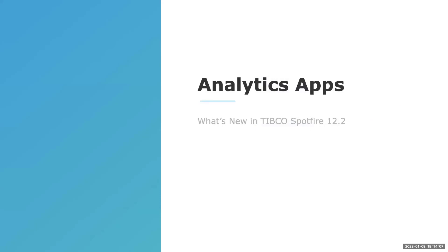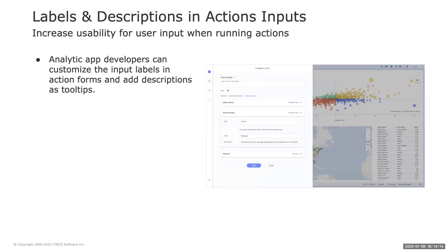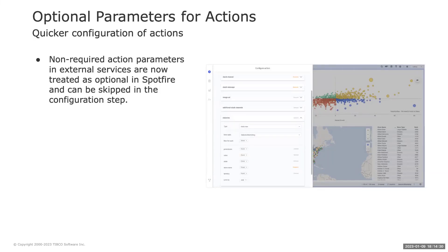For analytics applications, we have two new features specific to cloud actions. First, labels and descriptions: application developers who configure actions can now customize the labels and add descriptions to action fields. This makes it easier for end users running an action to better understand the type of inputs expected by the action.